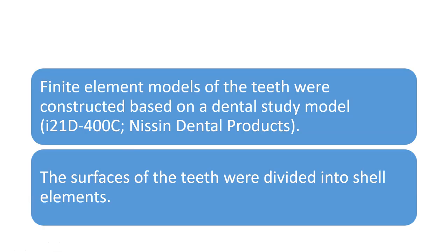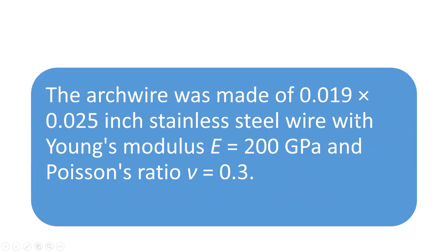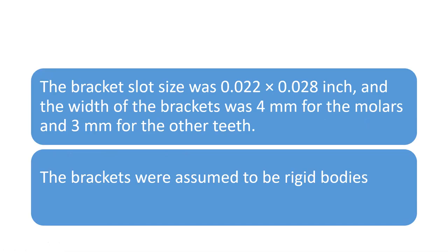The finite element model was constructed based on a dental product by Nissin Dental Products Company, with tooth surfaces divided into shell elements. The archwire was 19×25 mil stainless steel with Young's modulus of 200 GPa and Poisson's ratio of 0.3. The bracket slot was 22×28 mil, with posterior tooth bracket width of 4 mm and other teeth 3 mm. Brackets were assumed to be rigid bodies because their flexibility relative to the archwire was negligible.